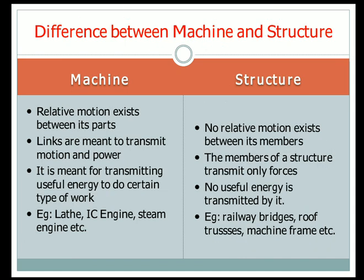Now the difference between machine and structure: in a machine, relative motion exists between its various parts or kinematic pairs. But in the case of a structure, there is no relative motion between its members. A structure is a stationary component designed to carry loads.